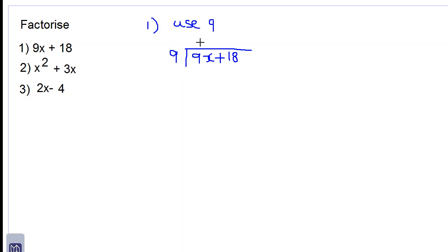9 into 9x is x, and 9 into 18 is 2. Therefore, 9x plus 18 equals 9 multiplied by x plus 2. So we have factorized 9x plus 18.